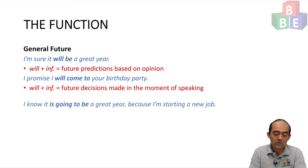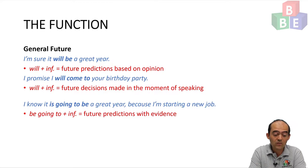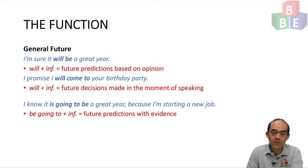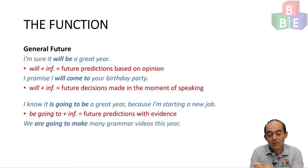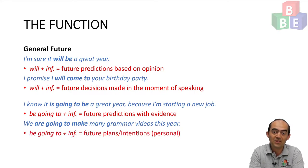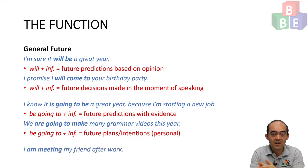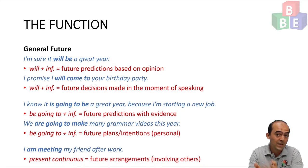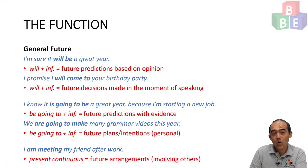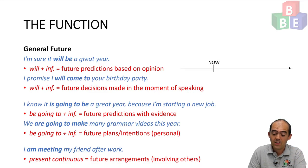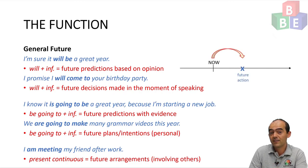We also can use be going to. Like, 'I know it is going to be a great year because I'm starting a new job' — be going to plus infinitive to make a future prediction with evidence, the evidence being the fact I'm starting a new job. Also, 'We are going to make many grammar videos this year' — be going to plus infinitive to talk about a personal plan or intention for the future. Finally, 'I am meeting my friend after work' — present continuous to talk about future arrangements, which are future plans involving another person or entity or organization. For all of these general future tenses, we're talking about the future from now — the present.